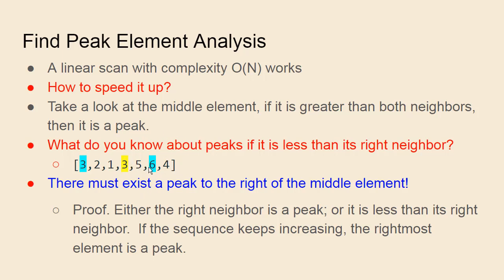Either that is a peak, or we know a peak exists to its left, or a peak exists to its right. Every time we will roughly half the region that we are looking at. Overall, we will get logarithmic complexity.